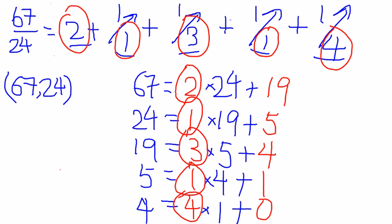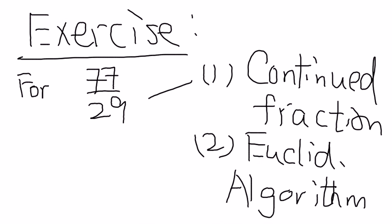And so now, the final thing for you in this short video is that it is a small exercise for all of you. Please look at the fraction here, 77 over 29. Please try to decompose it as a continued fraction. And then, please try to do it by the Euclidean algorithm.